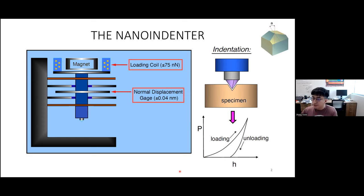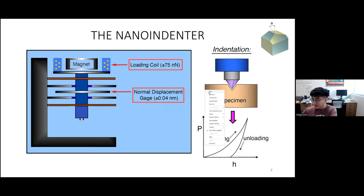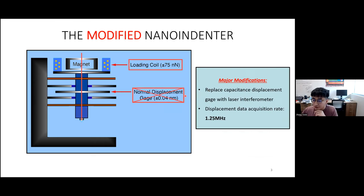However, to measure material response at higher strain rates, the capacitor gauge itself is not sensitive enough to record data at the microsecond level. Alternatively, what we did is replace this capacitor gauge with a laser interferometer, which boosts the data acquisition rate to 1.25 MHz, allowing us to record enough data at the microsecond level.